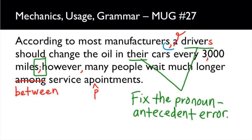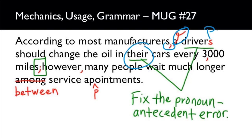We need a comma right here for our opening introductory element to separate it off from the main independent clause: 'drivers should change the oil in their cars every 3,000 miles.' I changed it to 'drivers' — plural — because before we had the singular 'a driver' but then 'their,' which is the plural pronoun. I don't like that disagreement, so I'll strike 'a' and make it 'drivers' plural, which matches the plural 'their,' and then happiness reigns. I also use a comma to separate large numbers, so three-comma-zero-zero-zero for 3,000.